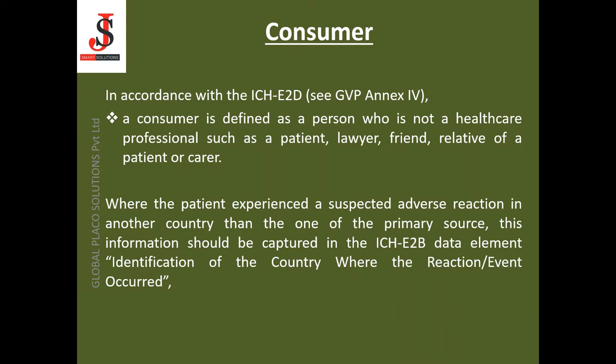Where the patient experienced a suspected adverse reaction in another country other than the primary source country, this should be captured in the ICH E2B data element as the identification of the country where the reaction or event occurred. For example, if a patient from Ireland takes the study drug and experiences an anaphylactic reaction while traveling from Ireland to Spain, the primary source country is Ireland and the occurrence country is Spain. We have to report where it has occurred and where the patient is from.